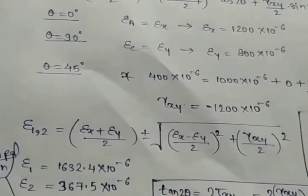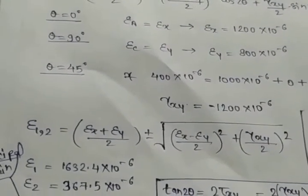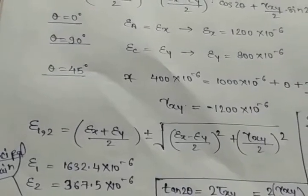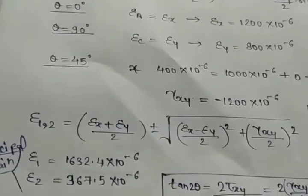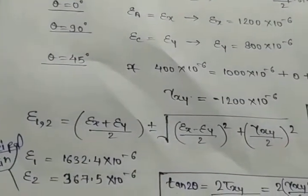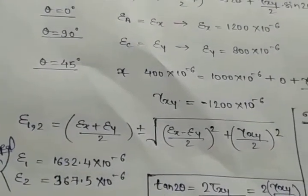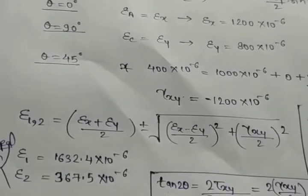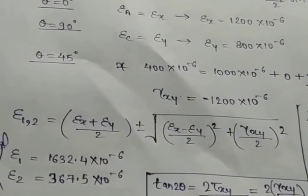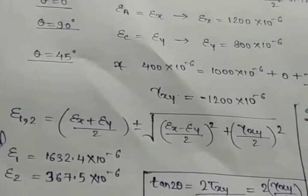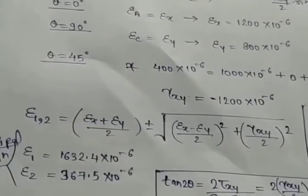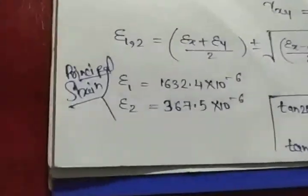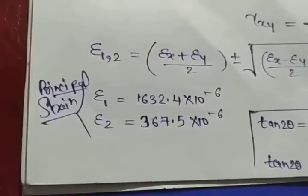To find epsilon_1 and epsilon_2, we apply the principal strain formula: epsilon_1,2 = (epsilon_x + epsilon_y)/2 ± √[((epsilon_x − epsilon_y)/2)² + (gamma_xy/2)²]. Substituting all values, we will get the values of epsilon_1 and epsilon_2, which are our principal strains — the first quantity we had to find.